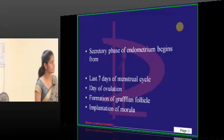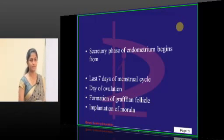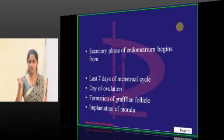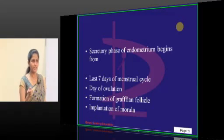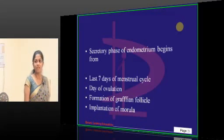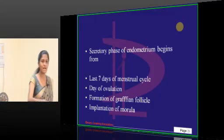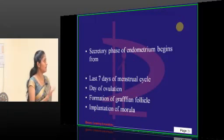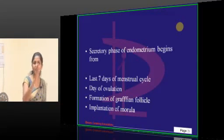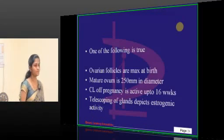The secretory phase — when do we call it the secretory phase, and when does it begin? The answer is A. It lasts the last 14 days, not 7 days — 14 days before and 14 days behind. The Graafian follicle forms before ovulation but the secretory phase starts after ovulation. Implantation of morula is unrelated. So the secretory phase begins from the day of ovulation.